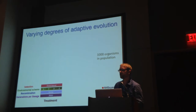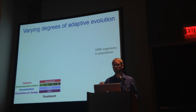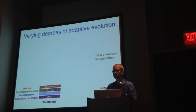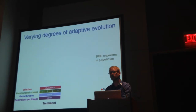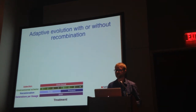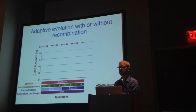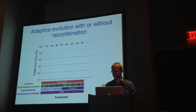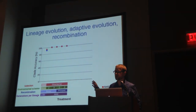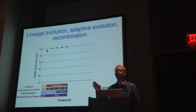We then varied degrees of adaptive evolution across the tree. We have four different treatments representing increasing directional selection across the tree topology. Adding recombination to all of these as well — because it's pretty simplistic — we don't see that these methods are having a hard time inferring the correct tree. You've seen all of this data before: lineage evolution, adaptive evolution, and recombination all as single factors.